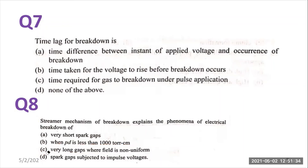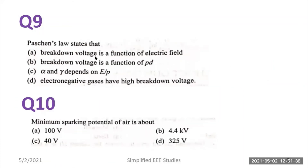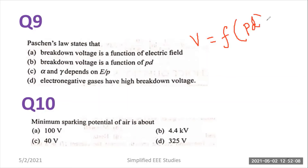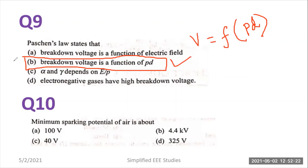Continuing the discussion: Paschen's law states that — breakdown voltage is a function of electric field; breakdown voltage is a function of pd; α and γ depend on E/p; or electronegative gases have high breakdown voltage — which could be the right answer? According to Paschen's law, the breakdown voltage can be written as a function of the product of pressure and distance (pd). We have also studied the Paschen's curve. Option B is the right answer — breakdown voltage is a function of pd.